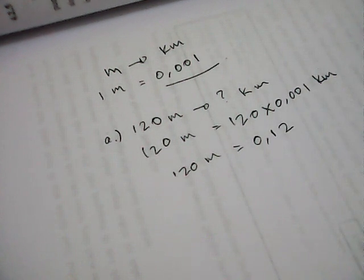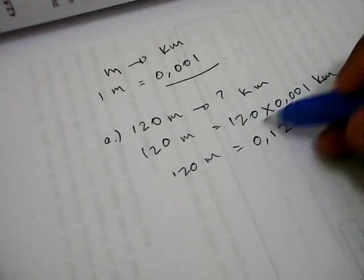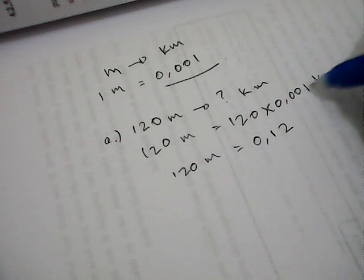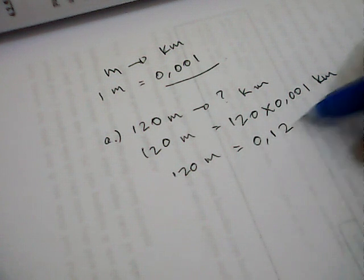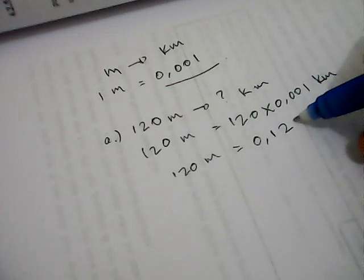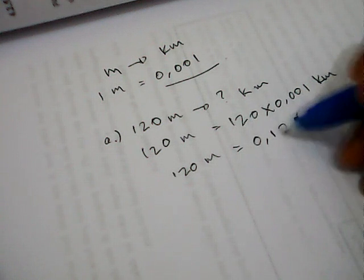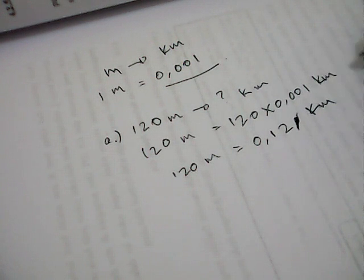I don't need to include trailing zeros because 0.120 is the same as 0.12 kilometers. So from this example